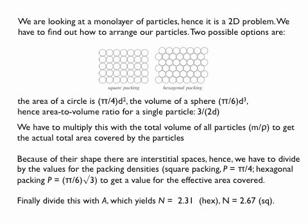If you look top down, that's what you can't see anymore on the graph. Because of the shape of these particles — as you can see in the picture — both in square packing and hexagonal packing, you have what we call interstitial spaces: space left in between. That space is effectively covered as well, and for that you need the packing densities. With a bit of high-school geometry, you can work out that for square packing it's π/4, and for hexagonal packing it's π/(6√3). This gives the effective area covered, which is larger than before because of these interstitial spaces.